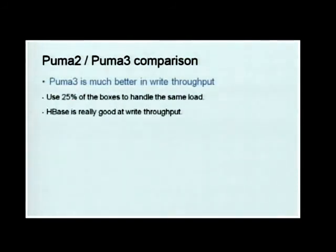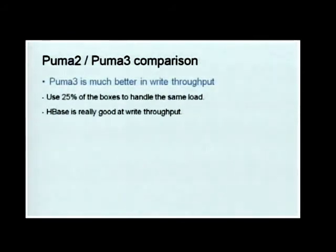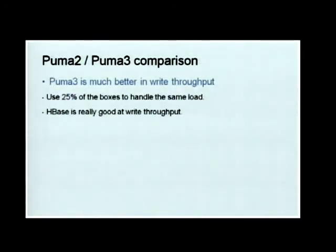Comparing the two systems: Puma3 is much better in throughput. With Puma2 we used 100 nodes to process about 600,000 log lines per second. With Puma3 we saved 75% of machines — we only used 25 machines to do the same workload.